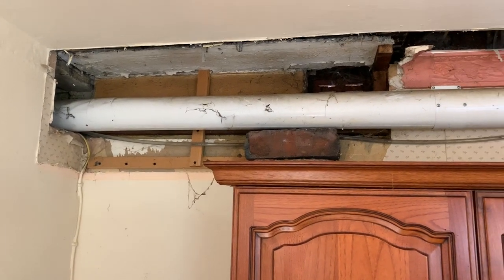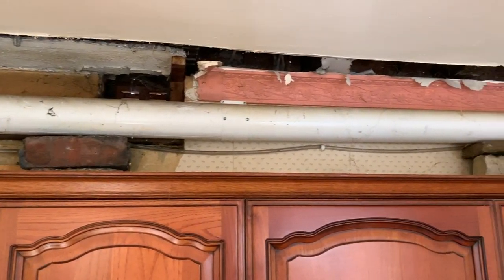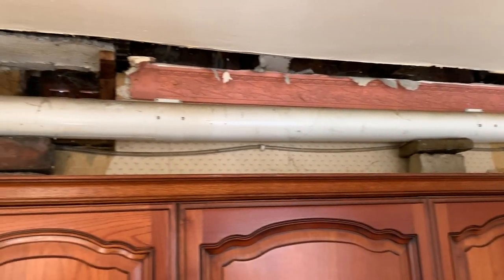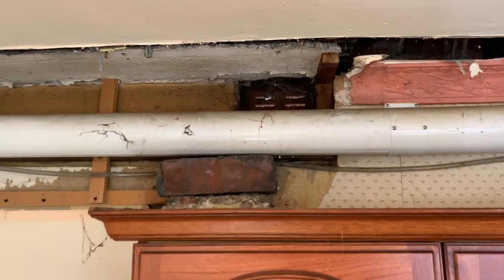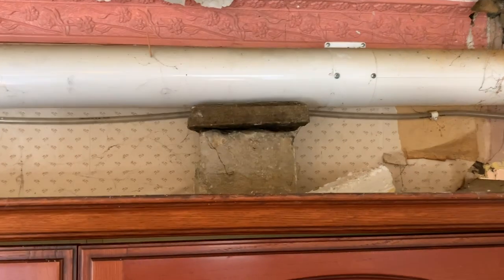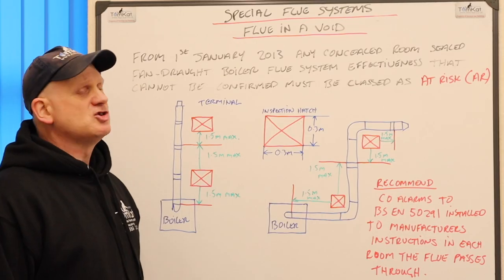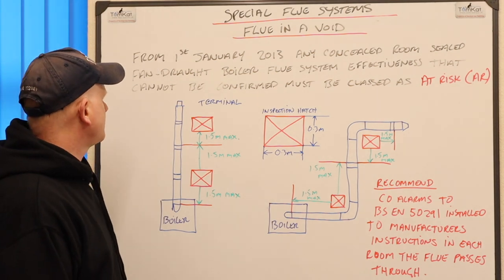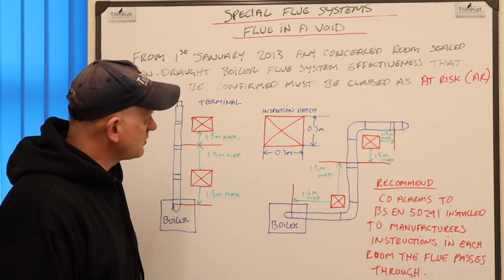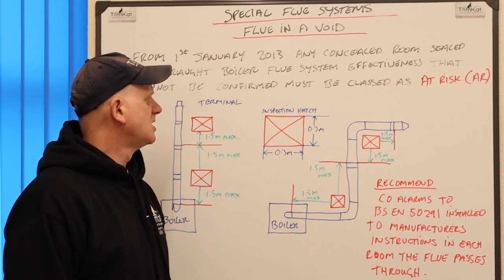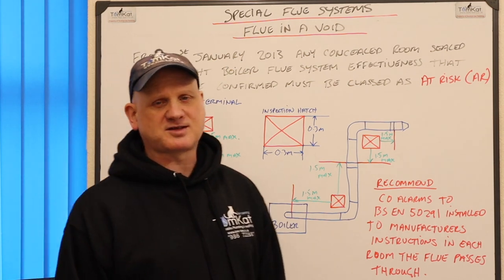This is a flue system we found when replacing a boiler — it had been boxed in, and you can see they actually used bricks instead of clips to support the flue. This is a good example of what you can find with a flue in a void. From the 1st of January 2013, any concealed room-sealed fan-draft boiler flue system where its effectiveness cannot be confirmed must be classed as at risk.